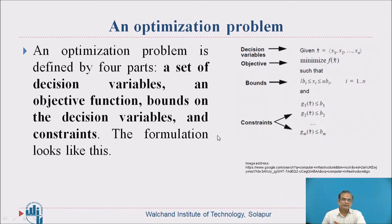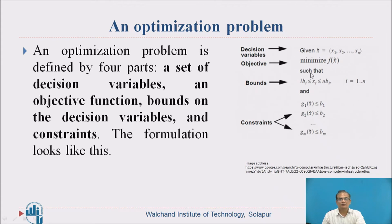An optimization problem is defined by four parts: a set of decision variables, an objective function, bounds on the decision variables, and constraints. The formulation will look like this: decision variables, objective, bounds, and constraints.